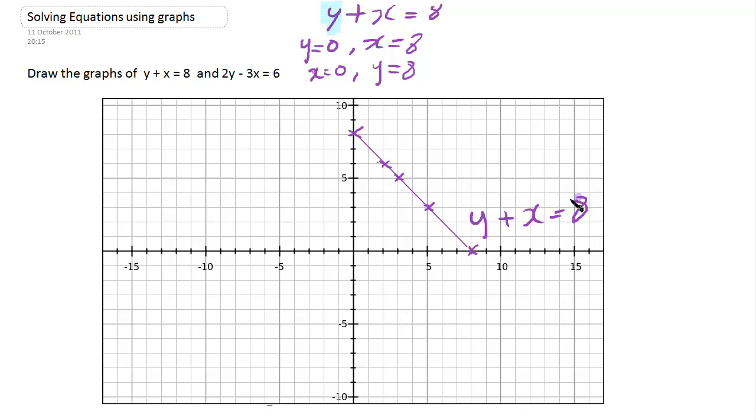Now let's look at 2y - 3x = 6. We're going to try putting y = 0 first. That part's no longer in the equation, so we just have -3x = 6, so x must equal 6 divided by -3, which equals -2. Let's plot the point x = -2 and y = 0 there.